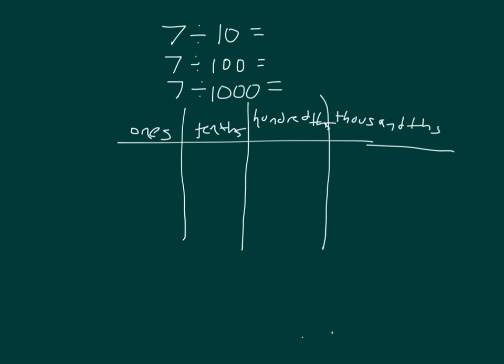Here we have a place value chart. You'll notice now we're dividing by 10, dividing by a hundred, and dividing by a thousand. 7, when we divide it into 10 parts, we get 7 tenths, which is written as 0.7.